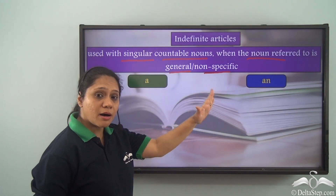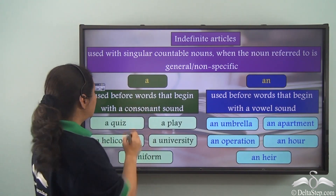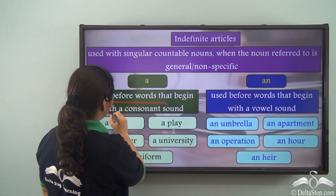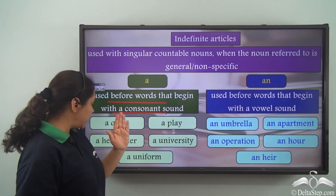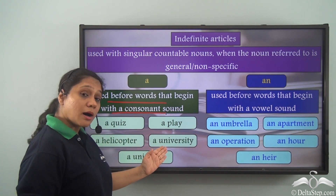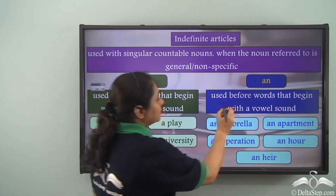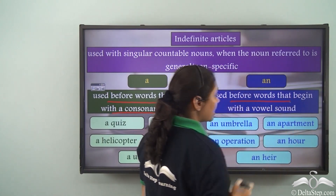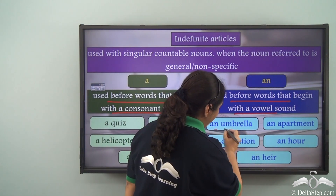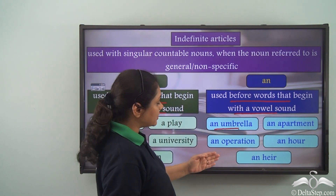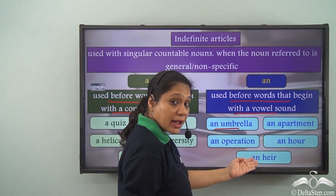A is used before words that begin with a consonant sound — for example: a quiz, a play, a helicopter, a university, a uniform. Whereas an is used before words that begin with a vowel sound — for example: an umbrella, an apartment, an operation, an hour, an air.